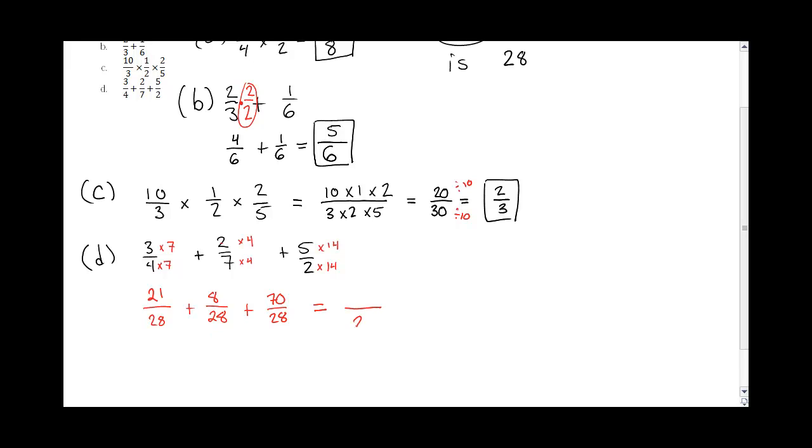I get 70 over 28. Now they all have a common denominator. Remember, when you add them, you keep that common denominator.